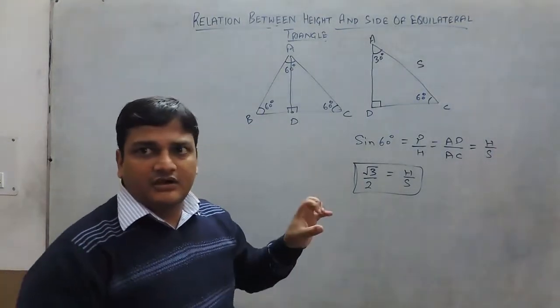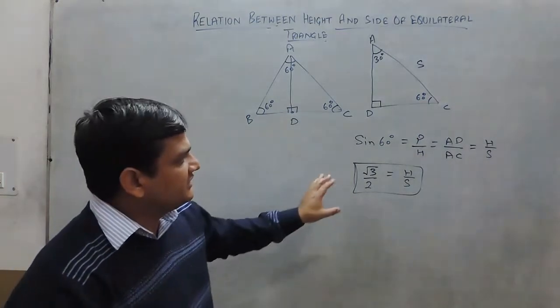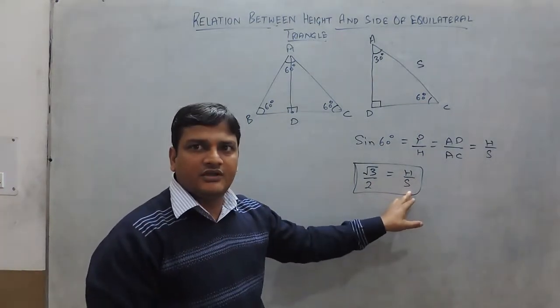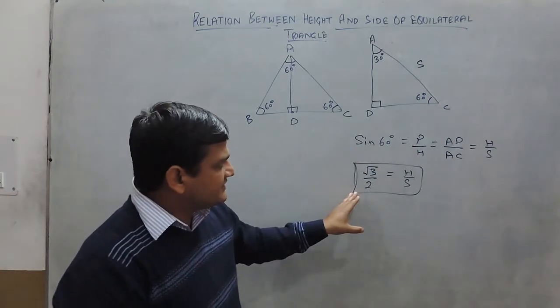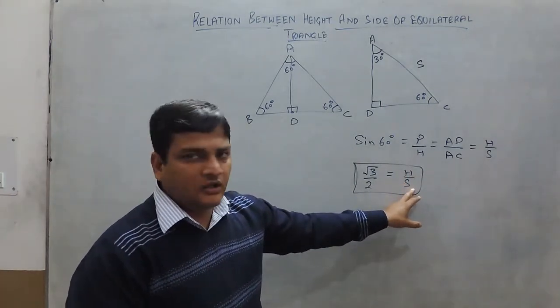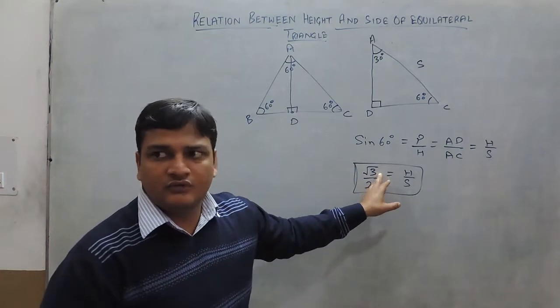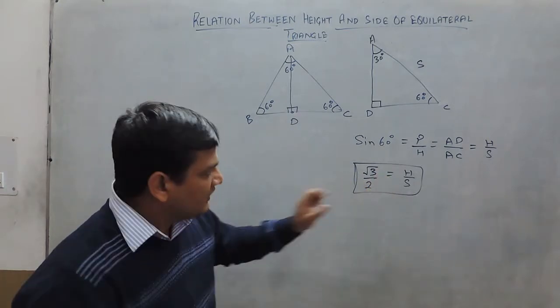Hello. In our previous part, we understood the relation between height and side of an equilateral triangle. The height to side of an equilateral triangle are in the ratio of root 3 to 2. Therefore,